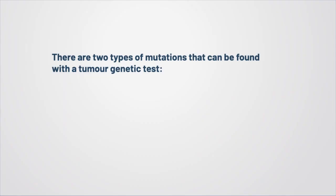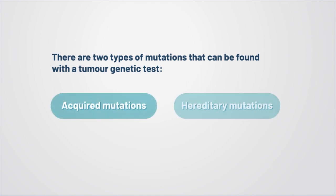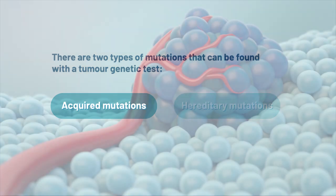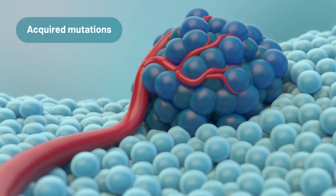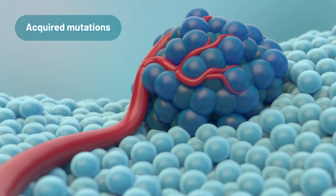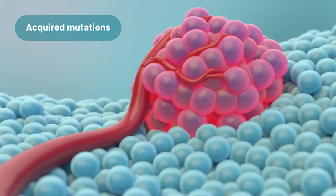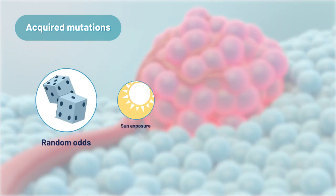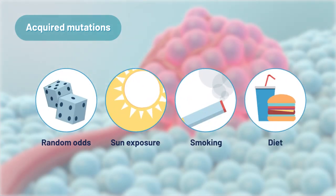There are two types of mutations that can be found with a tumor genetic test: one, acquired mutations, and two, hereditary mutations. Acquired mutations are mutations that are only found in tumor cells, not healthy cells. These mutations are caused by many factors throughout a person's lifetime. You are not born with them.